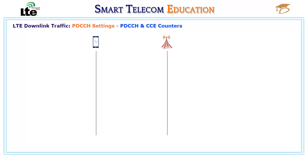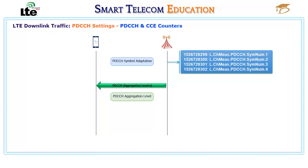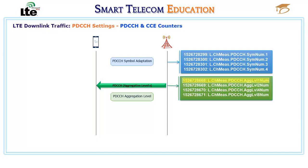Counters to monitor PDCCH and CCE performance: PDCCH symbol adaptation can be evaluated by counters for the number of times the PDCCH occupies one, two, three, or four symbols. When the eNodeB sends a PDCCH to a UE at a specific aggregation level, it increments counters for the number of PDCCH resource allocations with aggregation levels 1, 2, 4, and 8.